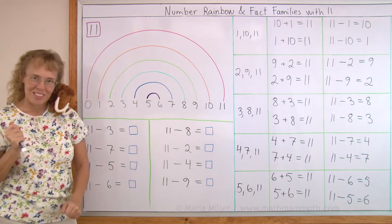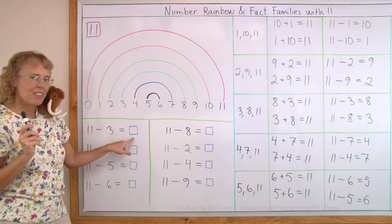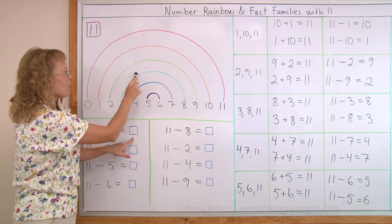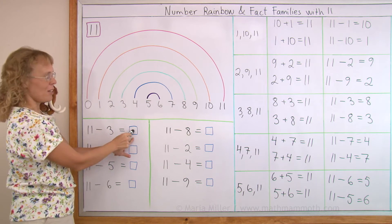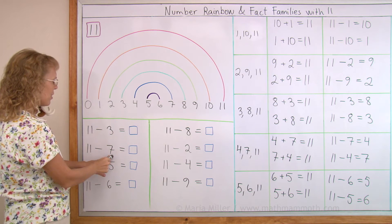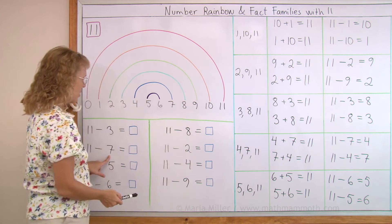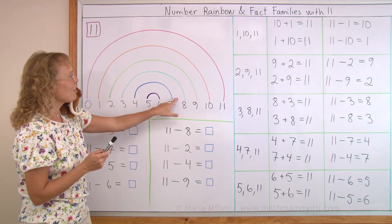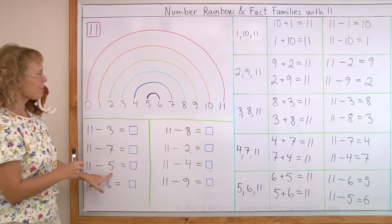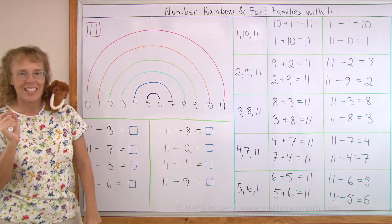And now the drill. You see? 11 minus 3. What goes here? Think of the fact family or think what number 3 goes with in the rainbow. 3, you follow the arc to 8. So 8 goes here. 8 and 3. How about 11 minus 7? What and 7 made 11? In the fact families there's 4 and 7. Or you can go to 7 and follow the arc to 4. Okay? 11 minus 5. 5 is here. It's paired with 6. So 6 goes here. And so on.